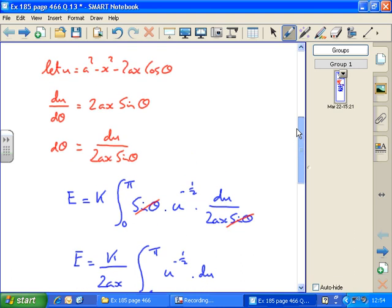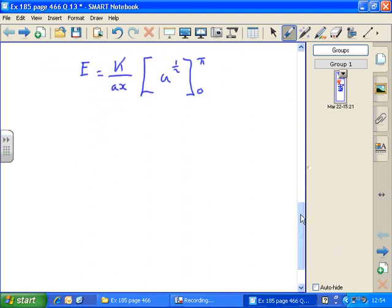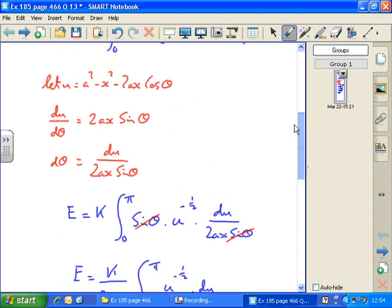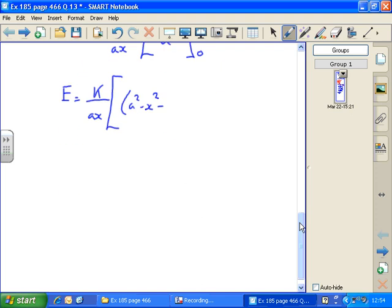Now what's u? U equals a squared minus x squared minus 2ax cos theta. So e equals k over ax times a squared minus x squared minus 2ax cos theta to the power of half, or the square root of that, between 0 and pi.